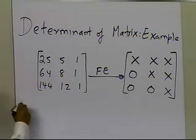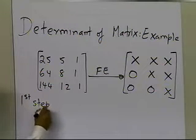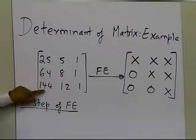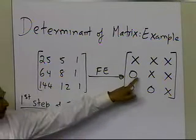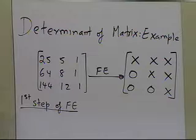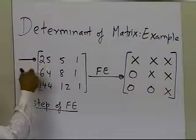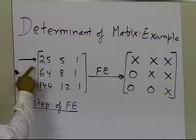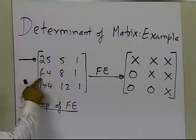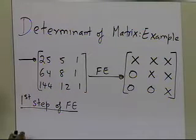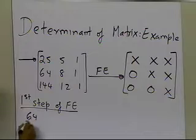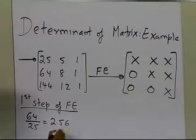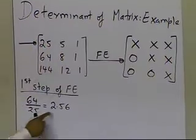There will be two steps of forward elimination here. In the first step, I'm going to make the first-column elements of rows 2 and 3 equal to zero, one at a time. I'll take the first row and use its leading element to eliminate below it. To zero out the 64 in row 2, I divide 64 by 25, which gives 2.56.